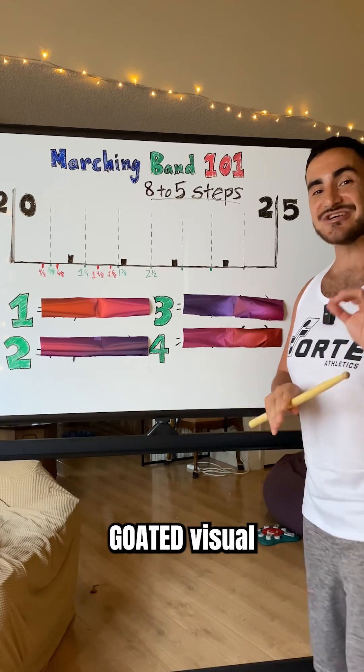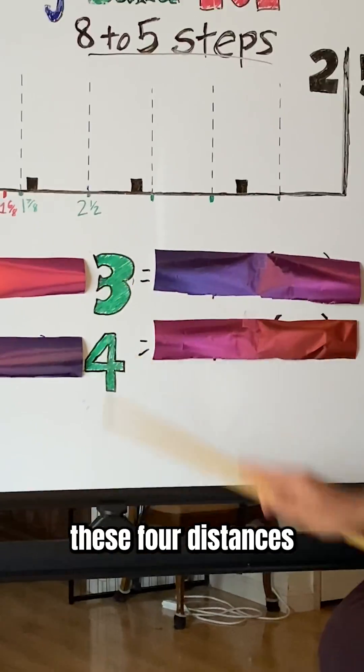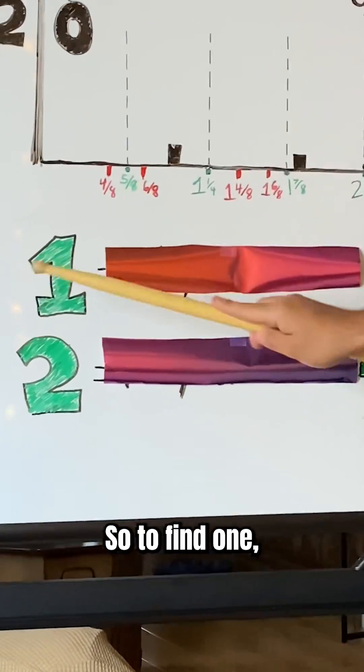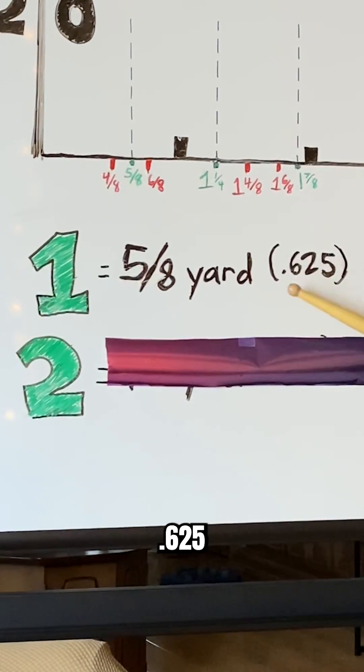The first step towards becoming a good visual performer is learning how to find these 4 distances from the yard line. So to find 1, you must locate 5/8 of a yard, or 0.625.